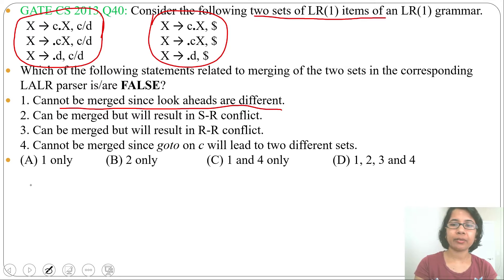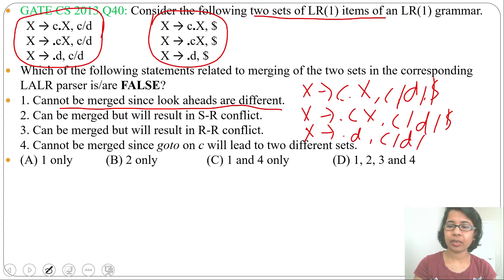After merging, the new state will contain X derives c dot X with lookahead c, d, and dollar. Then second LR1 item X derives dot c X with lookahead c, d, or dollar. Next LR1 item X derives dot d with lookahead c, d, or dollar.